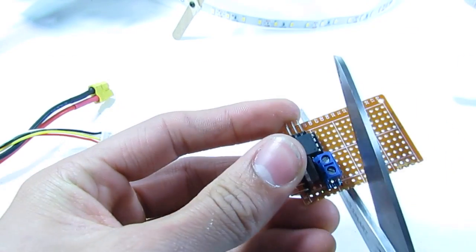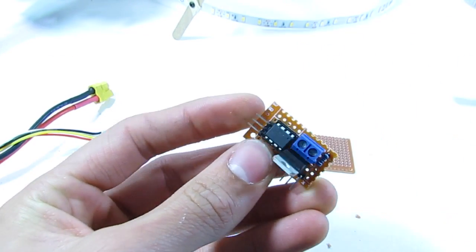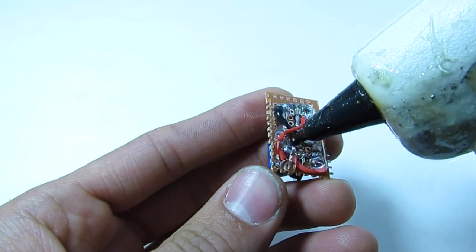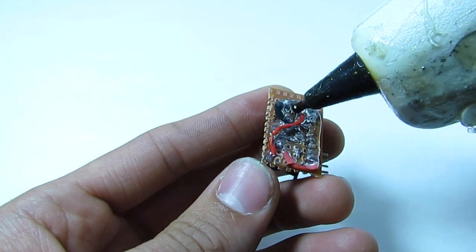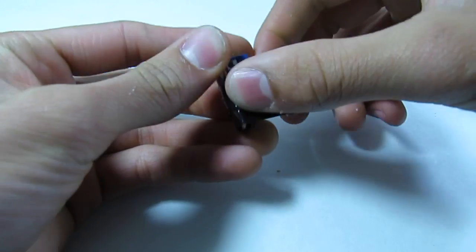Now all we have to do is cut the PCB to size and insulate it with some hot glue and electrical tape. Use a generous portion of hot glue to make sure that everything is insulated and there's no chance of shorting out wires.